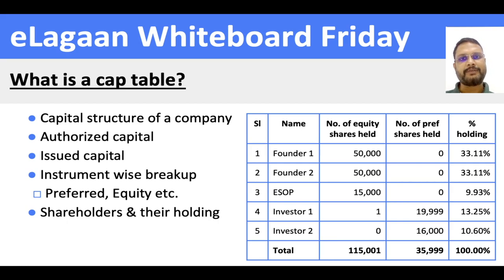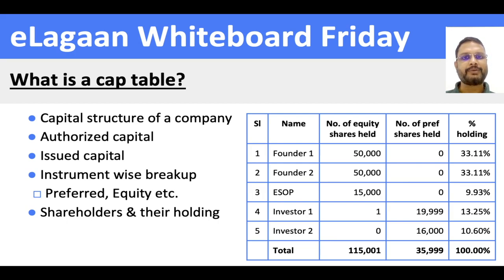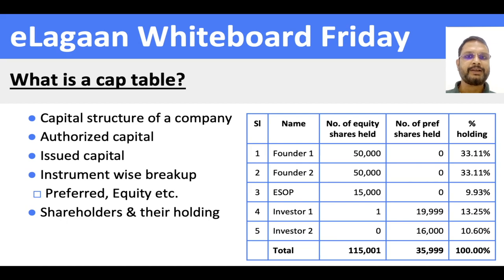You also give the breakup of each shareholder — how much equity they hold based on the instrument types. For example, if somebody is holding Series A shares, Series B shares, equity shares, or CCDs — compulsorily convertible debentures — those are also represented in the cap table.